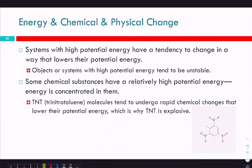Systems with high potential energy are unstable, because everything just wants to chill and get rid of excess energy. The more energy a substance has, generally the more unstable it is. For example, TNT (trinitrotoluene) has a lot of potential energy in its bonds — there's a lot of strain. That's why it's unstable, and all it takes is one molecule to change and release that energy for the rest to react and cause an explosion.